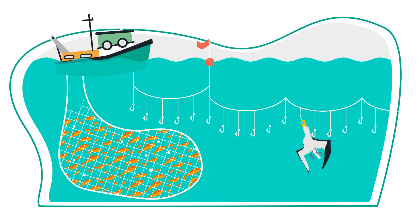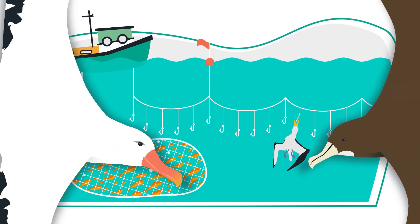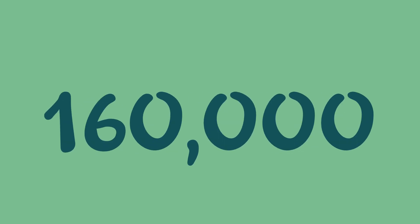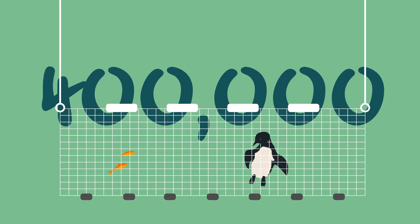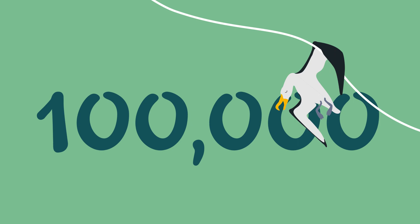Bycatch in fisheries is a major cause of global population declines in albatrosses and large petrels. Data are sparse, but each year at least 160,000 seabirds are thought to be killed in longline fisheries, 400,000 in gillnet fisheries, and possibly 100,000 seabirds in trawl fisheries.